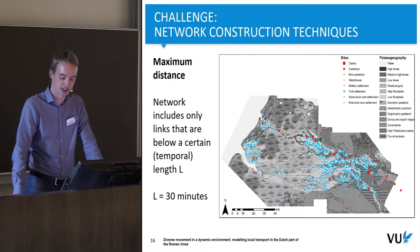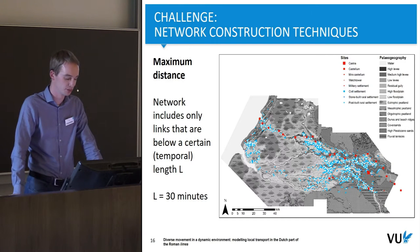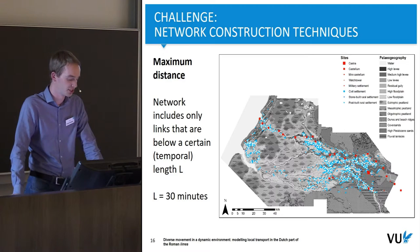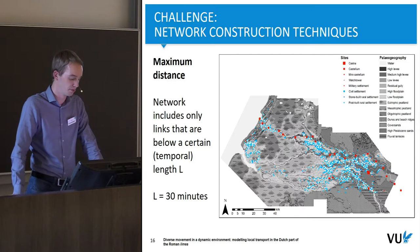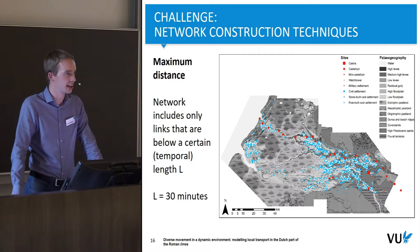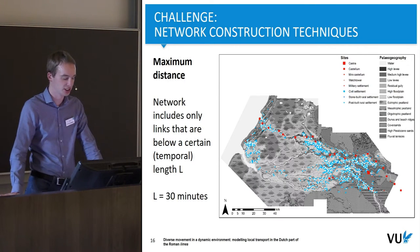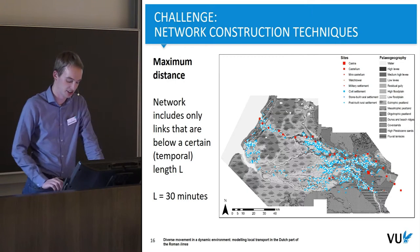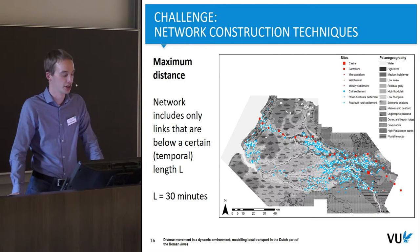A second important aspect is the choice of network construction techniques — a question that came up in the previous presentation as well. In my earliest conference presentations, I used only a single network construction technique based on a maximum distance: choosing a threshold below which I only include those links. This example includes only links that can be traveled within 30 minutes. It works very well for the case study in the center of the research area where site density is largest, but doesn't really work for areas where site density is much smaller, so we need other techniques to complement it.